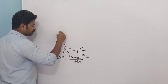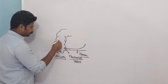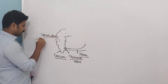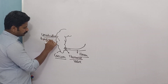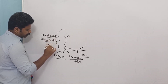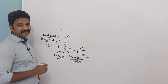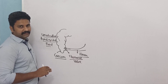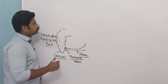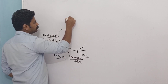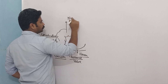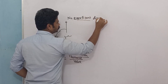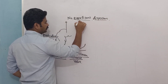We have to see what is the role of the large intestine in the process of digestion and absorption. The large intestine does not play a significant role in the process of digestion, so there is no significant digestion which takes place in the large intestine.